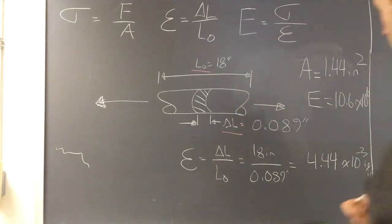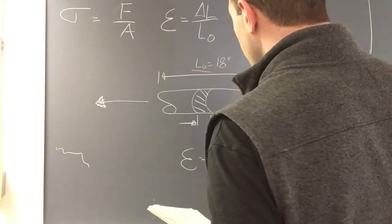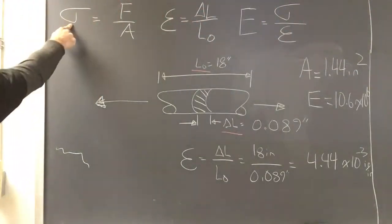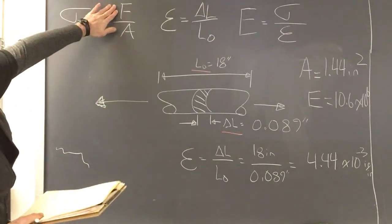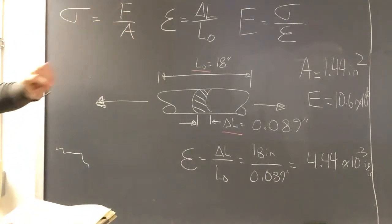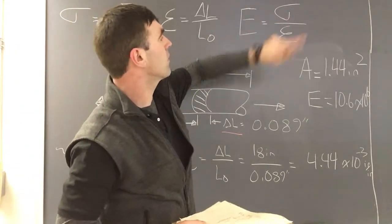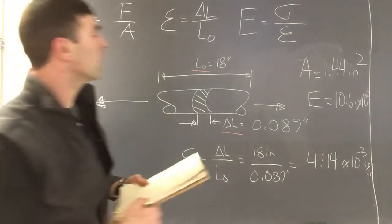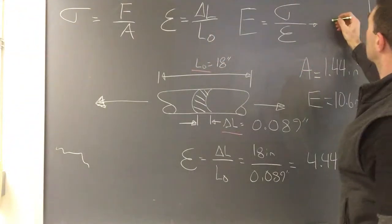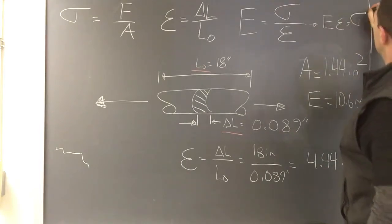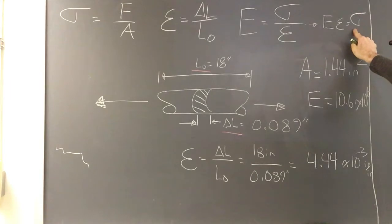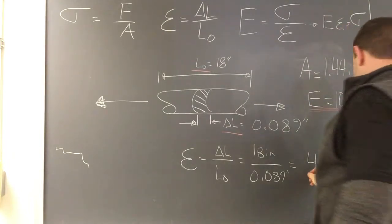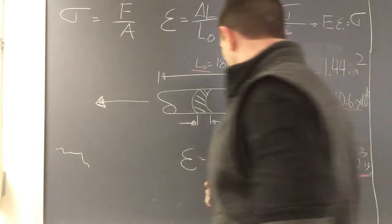So now, what do we need? If we can find the stress, we can solve for F. So let's focus on finding this. We already have big E, we just got strain, so all we have to do is rearrange: E times strain equals stress. Bingo. So let's just take this number which we looked up in the table, this number that we just found, and multiply them together.